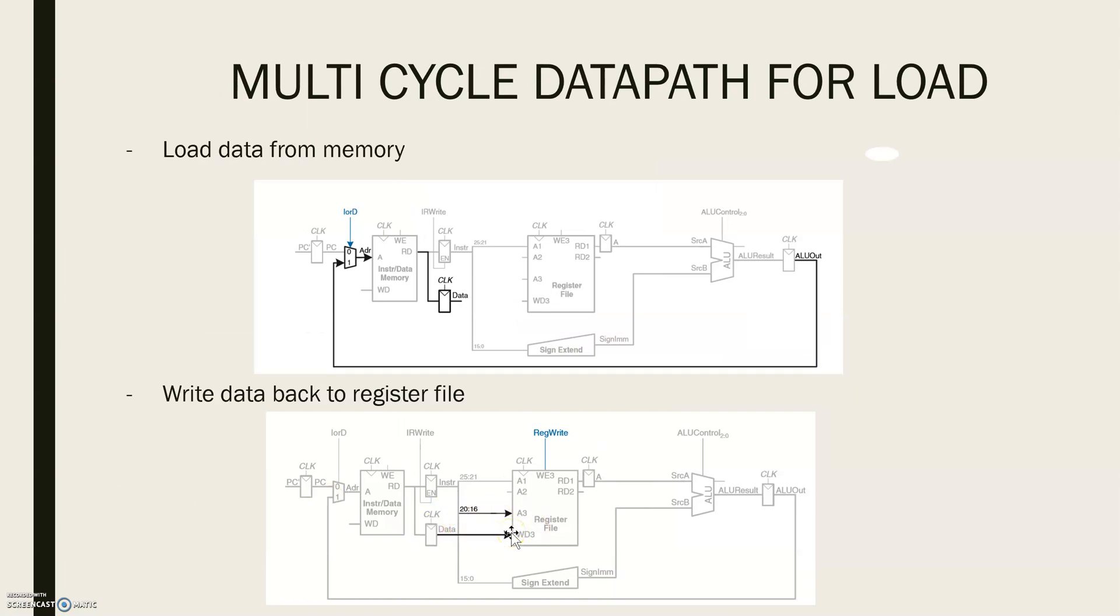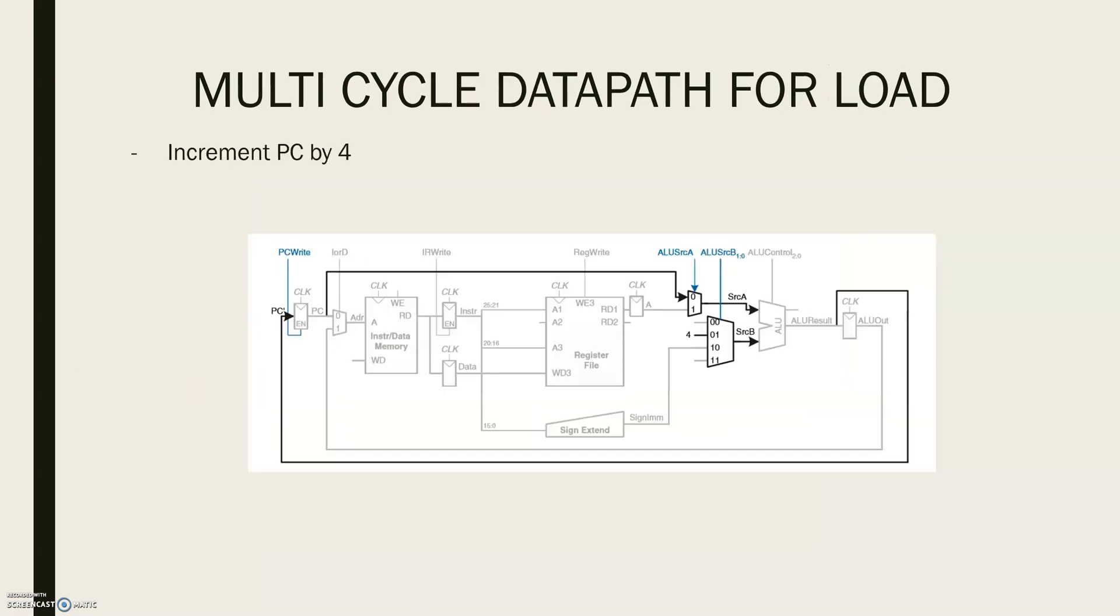While all this is happening, the processor must update the value of PC by adding 4 to the old PC. In a single cycle processor a separate adder was needed. Here in a multi-cycle processor we use the existing ALU on one of the steps when it's not busy to do so. We insert a source multiplexer to choose PC and constant 4 as ALU inputs.